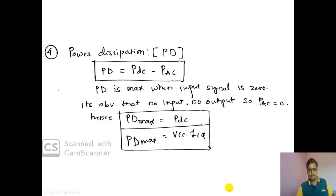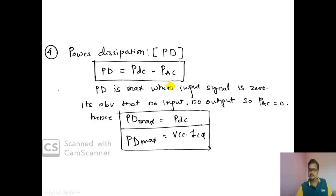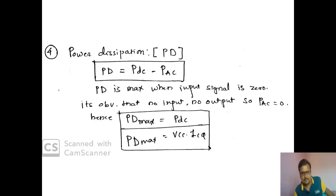The fourth point is power dissipation. Power dissipation means how much I have taken minus how much I have generated — for example, taking 10 watts and delivering only 6 watts means 4 watts is wasted. PD = PDC − PAC. In electronic circuits, power dissipation is in the form of heat.